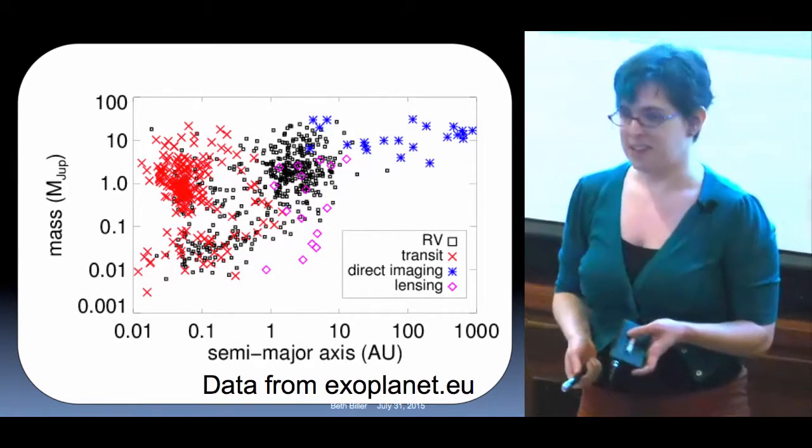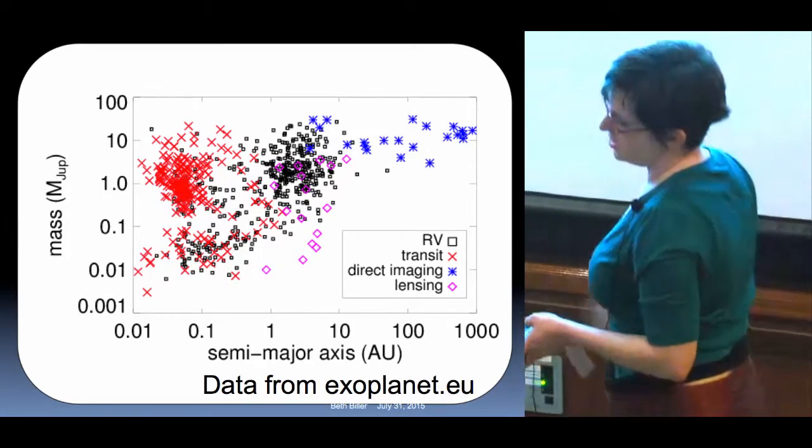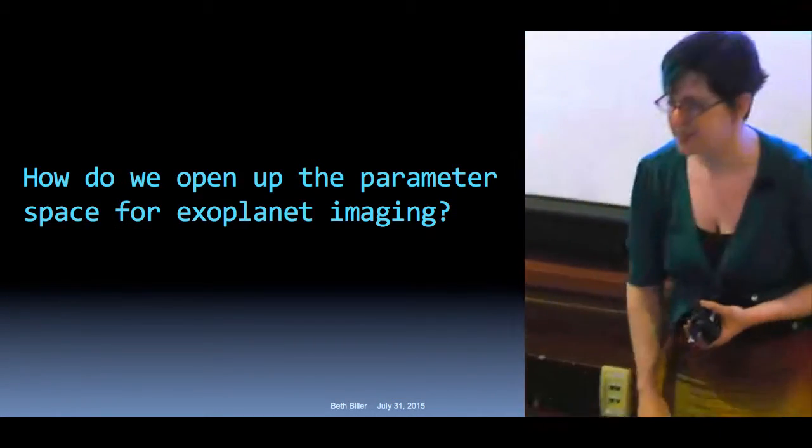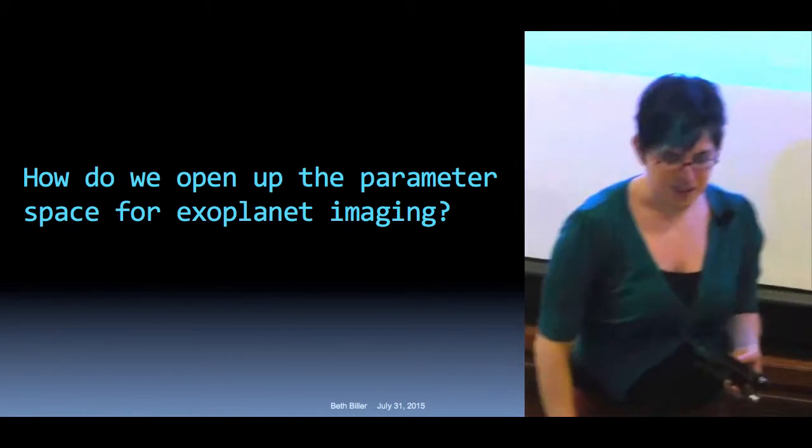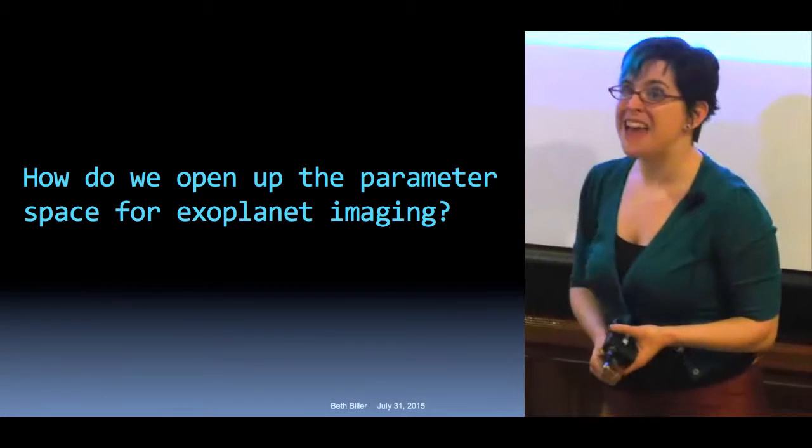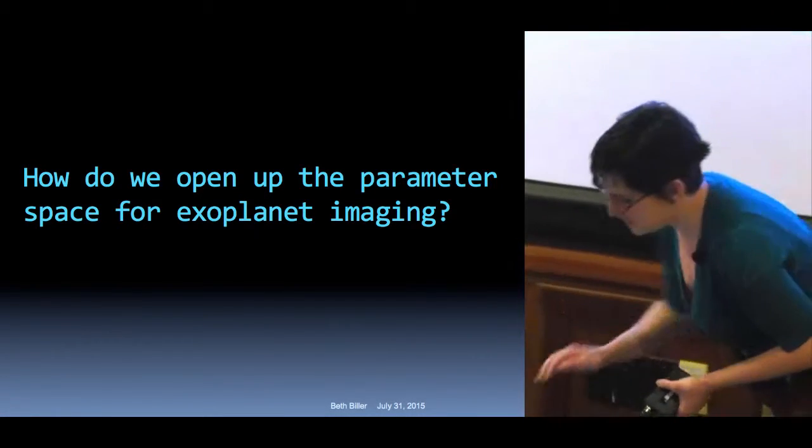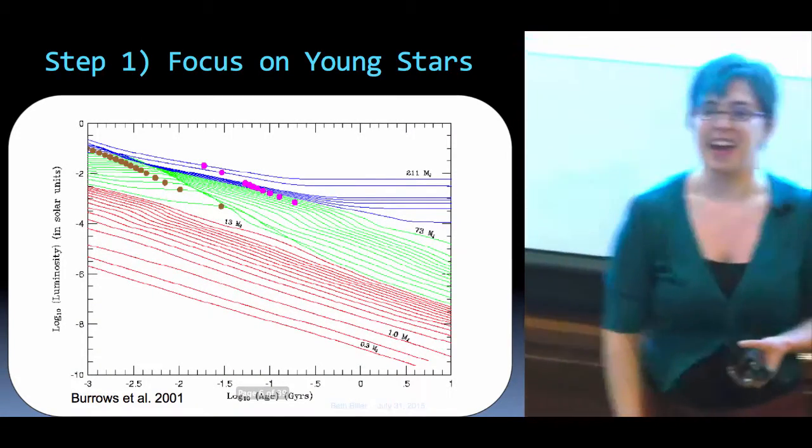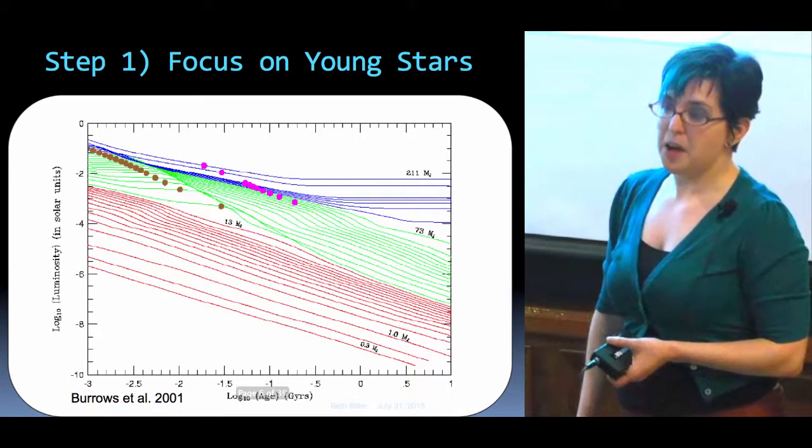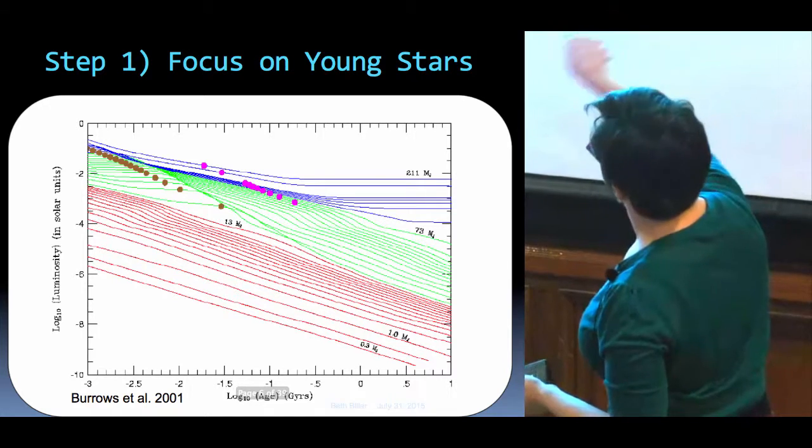So RV and transit, generally closer in. Lensing is particularly interesting because you can get smaller planets a bit further out. But again, outside of 10 AU, direct imaging is the only game in town. And granted, right now with direct imaging, we're looking at high mass planets at these separations. But these are going to be important in terms of what sort of system architectures you get in general. So now that we've established that we're interested in finding these, how do we do so? It's a technically difficult thing to do. So I'm going to step through how we open up parameter space for exoplanet imaging. The first and obvious issue we have to overcome is that stars are very, very bright and planets are very, very faint.